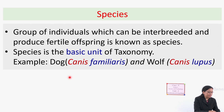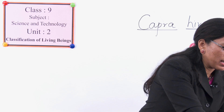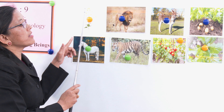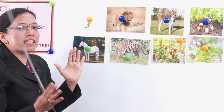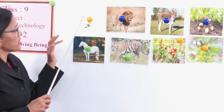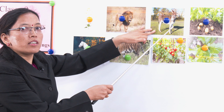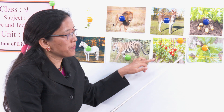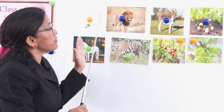Now let us do an activity. Here some pictures are given on the board: mustard plant, lion, donkey, potato, horse, tiger, tomato, and spinach. Can you arrange them by close relation — which are closely related to each other? We have learned about genus, species, and classification. Let us try to find which organisms are closely related.